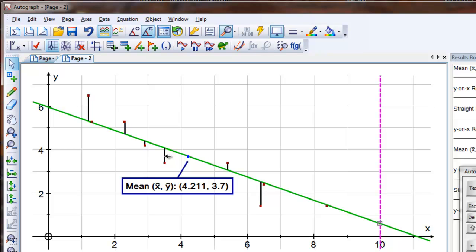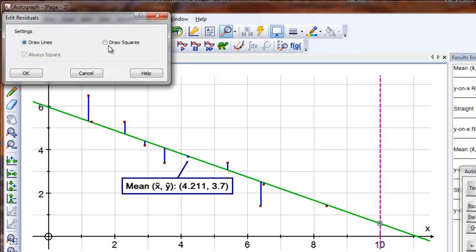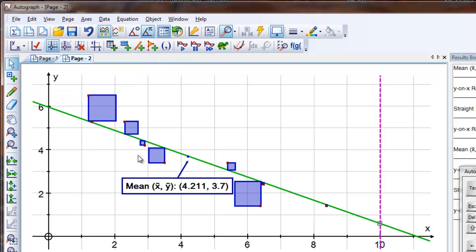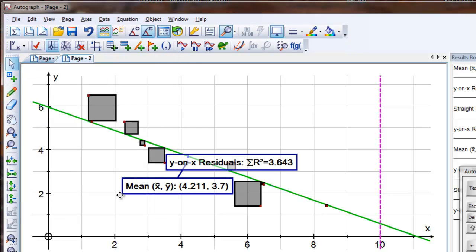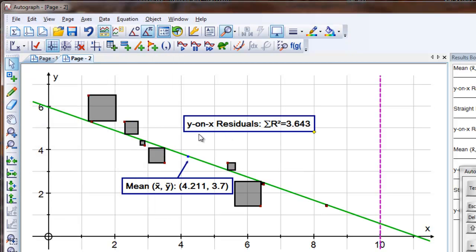I'm going to double click on this now and choose the squares option. That shows precisely what we're doing. We're adding up all these squares and if I select those squares as an object and go to the text box, there you can see we can display the sum of the residuals, Y on X. Now 3.643 at the moment.